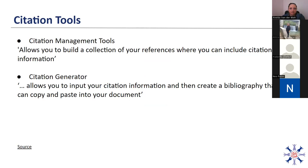With citation tools, a citation management tool allows you to build a collection of your references where you can include citation information, URL links, notes, and PDF files. Within these libraries, you can group, organize, and search for items, share items with others, and back up your library online. With a citation generator, this is often available online as a website which allows you to input your citation information and then create a bibliography that you can copy and paste into your document.